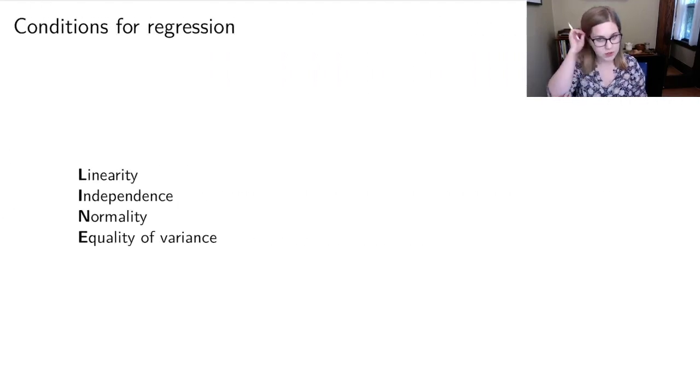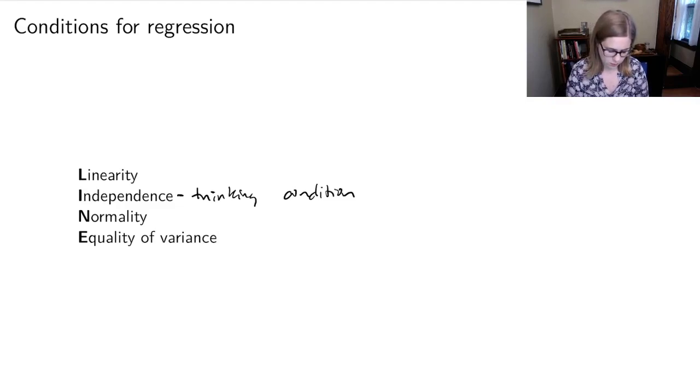Just as a reminder, we've got our four conditions for regression. Independence is the thinking condition, and the other three you can check with plots. I'm going to draw a quick picture for each of these conditions of what it looks like when it is upheld and when it's violated.